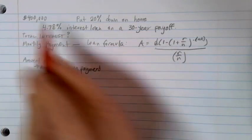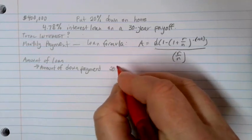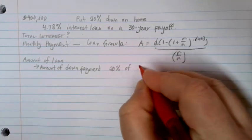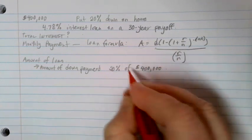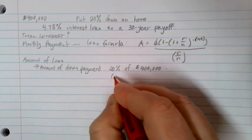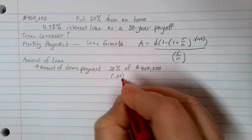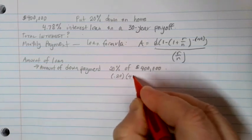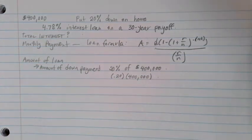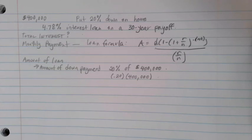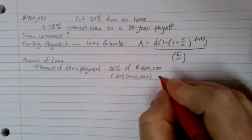So 20% of 400,000 will give us that. And to find 20% of anything, we're going to change that 20% to its decimal format. We're going to multiply by 400,000 to figure out what that's going to be. So if we do 0.2 times 400,000, we come up with $80,000.